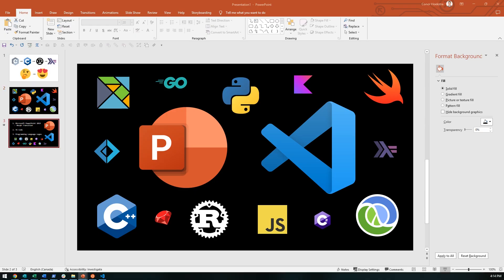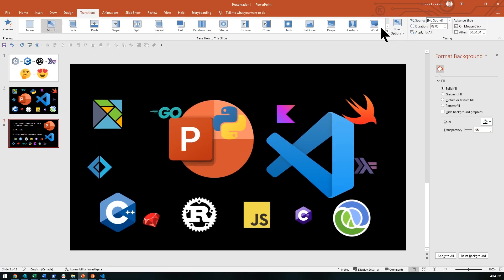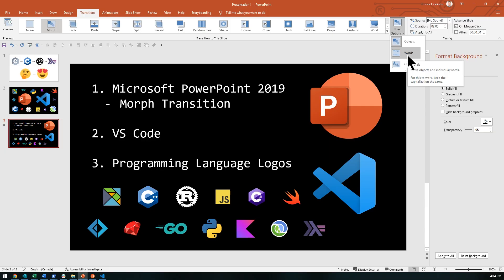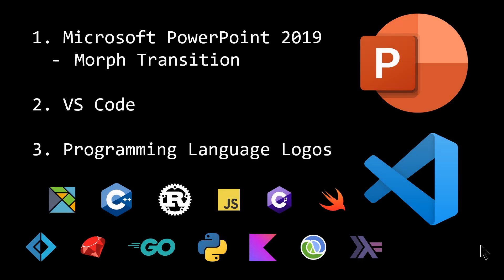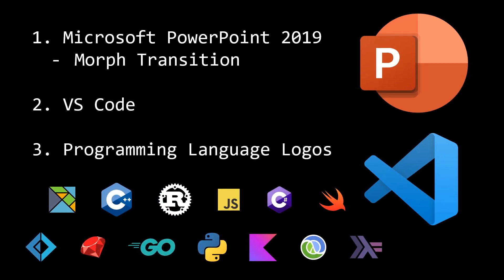If we hop out of this presentation, we can take a look at the morph transition that you just saw. If we go up to Transitions and check Morph — look at that. The key thing you need to know about the morph transition is that by default it has three different modes, and by default it is set to Objects. But when you're dealing with code, you typically want Words, and you get this beautiful transition where an algorithm figures out where the closest word is and slides it to the place from the previous or next screen. Very beautiful — this is basically all you need to know. Microsoft PowerPoint 2019, morph transition.